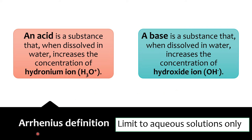This definition is very limited. First, you have to look at substances in water — without water, you cannot identify acids or bases. Also, for a substance to be a base, it must produce hydroxide ion. If not, it cannot be identified as a base. For example, ammonia (NH3) has no OH at all and cannot be identified as a base by Arrhenius. So a broader definition is needed.